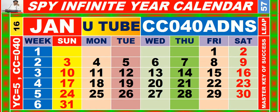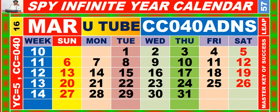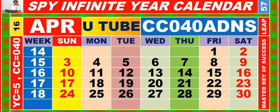Calendar for the month of January having calendar code equal to 0 for 0. Calendar for the month of February having calendar code equal to 0 for 0. Calendar for the month of March having calendar code equal to 0 for 0. Calendar for the month of April having calendar code equal to 0 for 0.